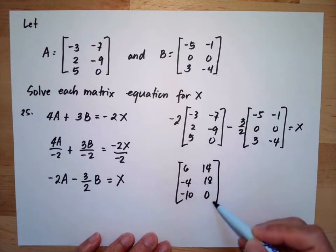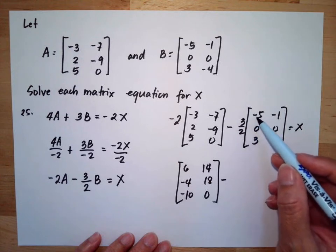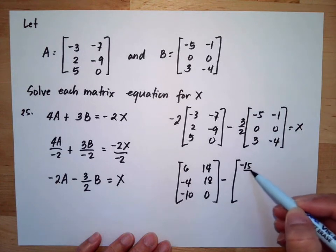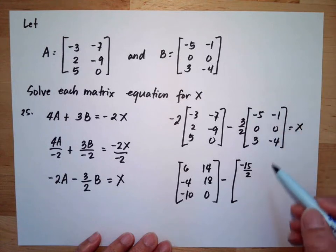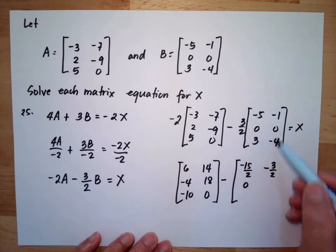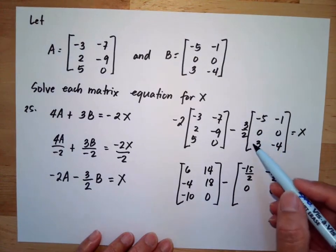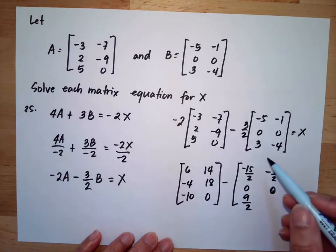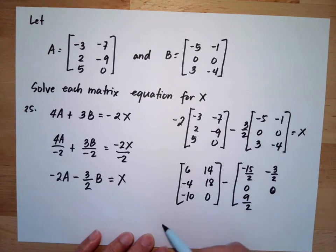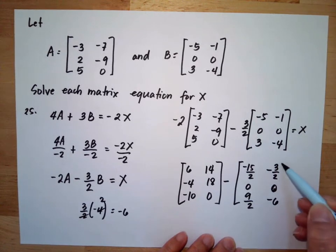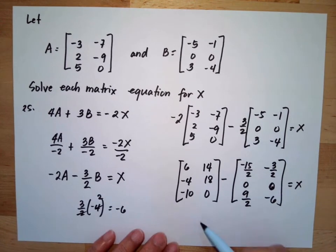Now computing negative 3 halves times matrix B: negative 3 halves times negative 1 equals 3 halves; negative 3 halves times 0 is 0; negative 3 halves times 3 equals 9 over 2; and negative 3 halves times negative 4 reduces to positive 6.